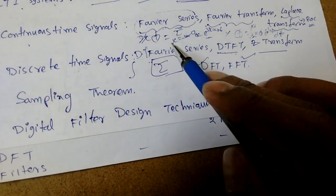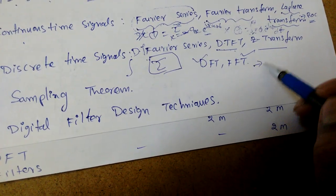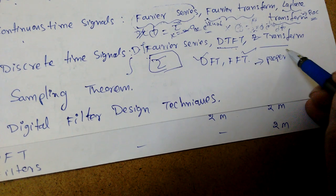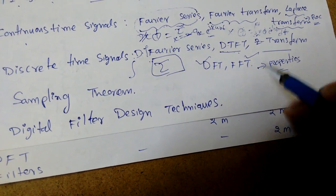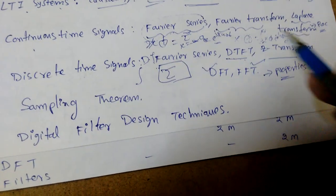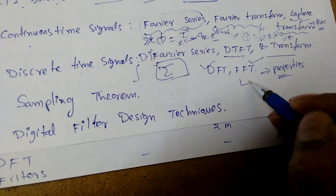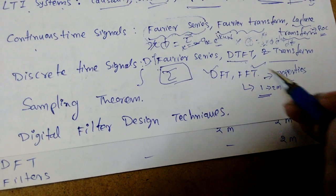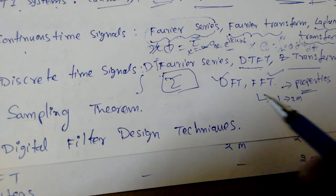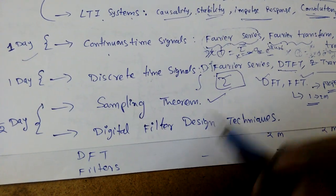All these Fourier series and transforms have properties we need to learn. We should make one table of all properties — from those properties we can get at least one to two guaranteed marks, because we apply a property to find different values.